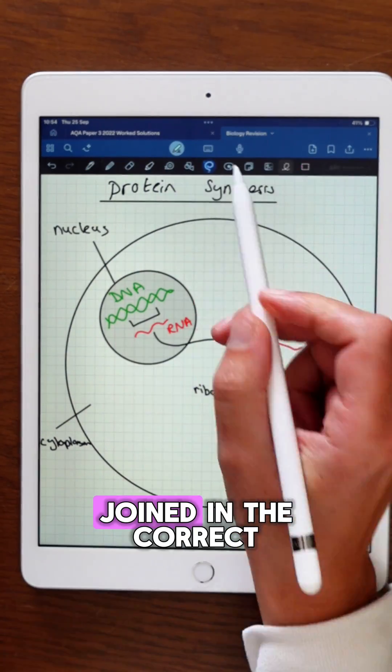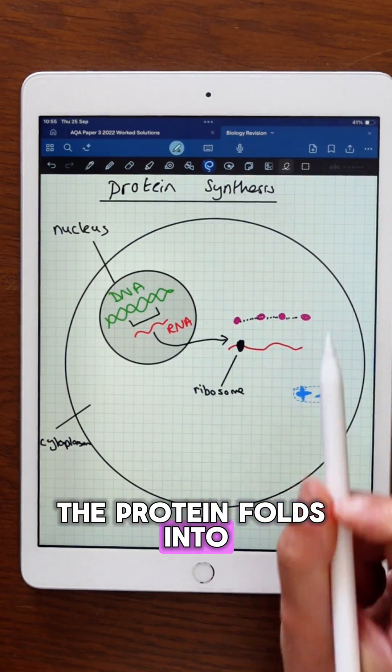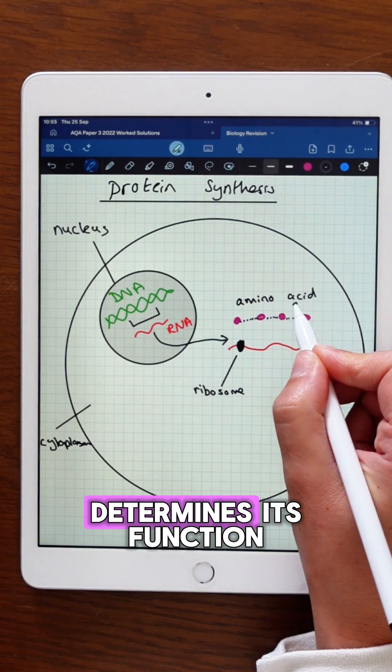The amino acids are joined in the correct order to make a protein chain. Once complete, the protein folds into a specific shape which determines its function.